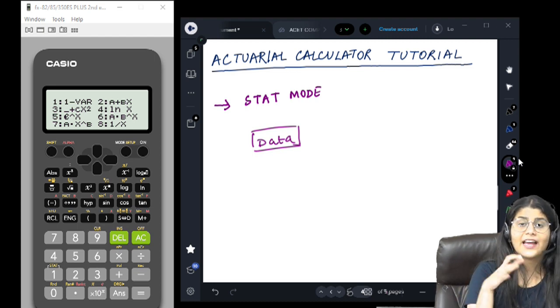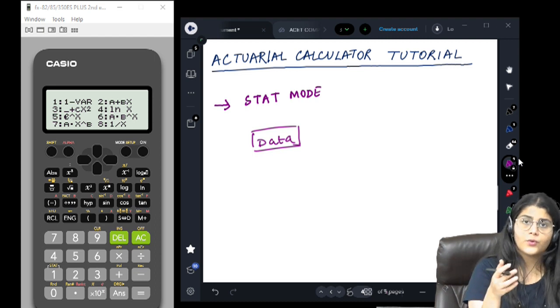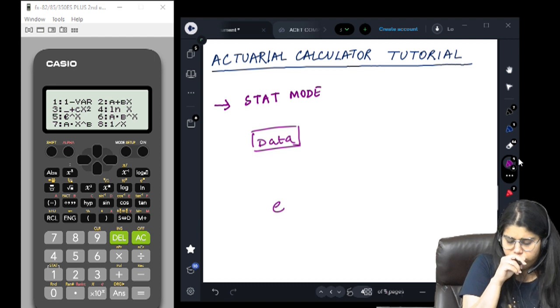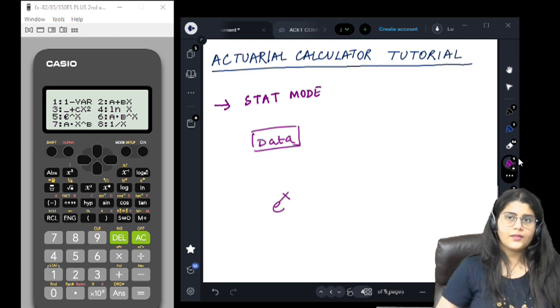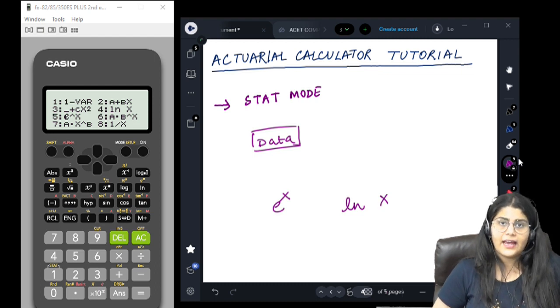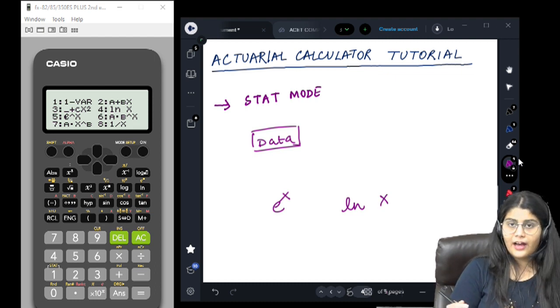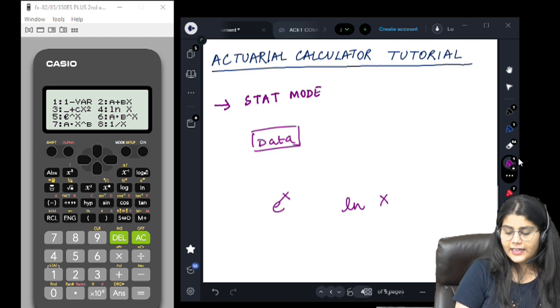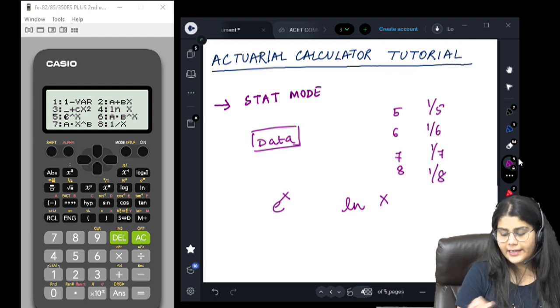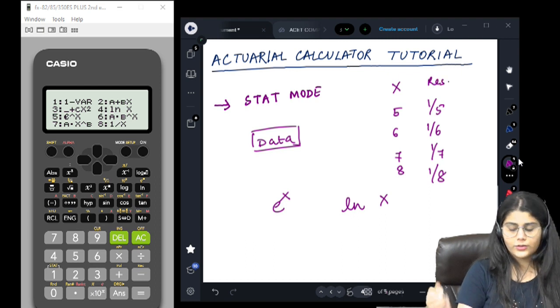If you have exponential data, which means whatever x values you enter, they have to be used in the form of e to the power x, or you have logarithmic data in the form of ln x. If you have reciprocal data, then if you are entering 5, 6, 7, 8, you want it to be interpreted as 1 by 5, 1 by 6, 1 by 7, 1 by 8. These are your x values and these are your resulting values.